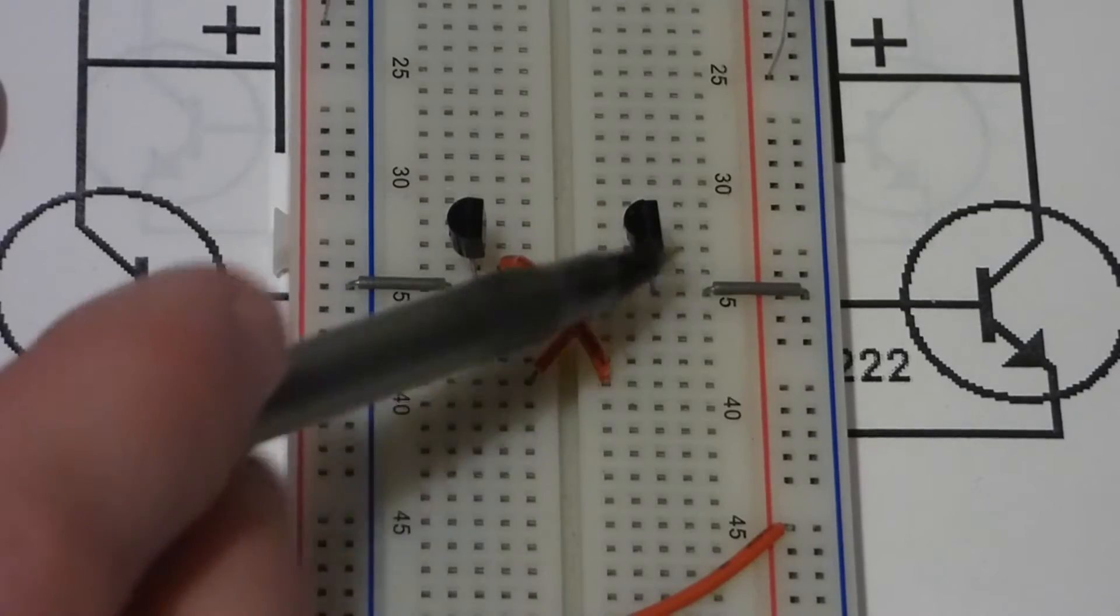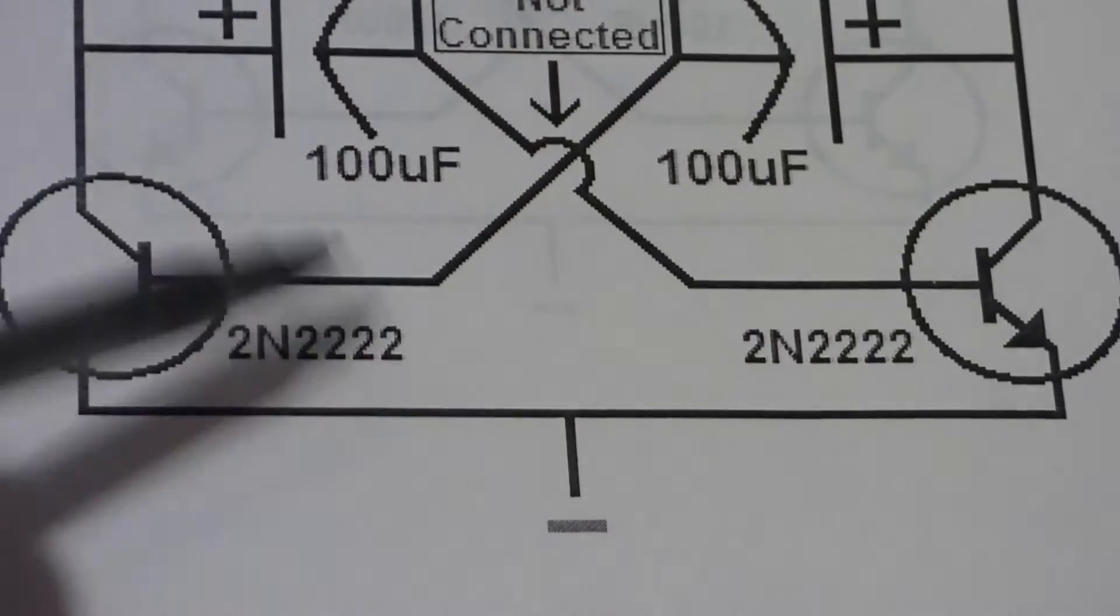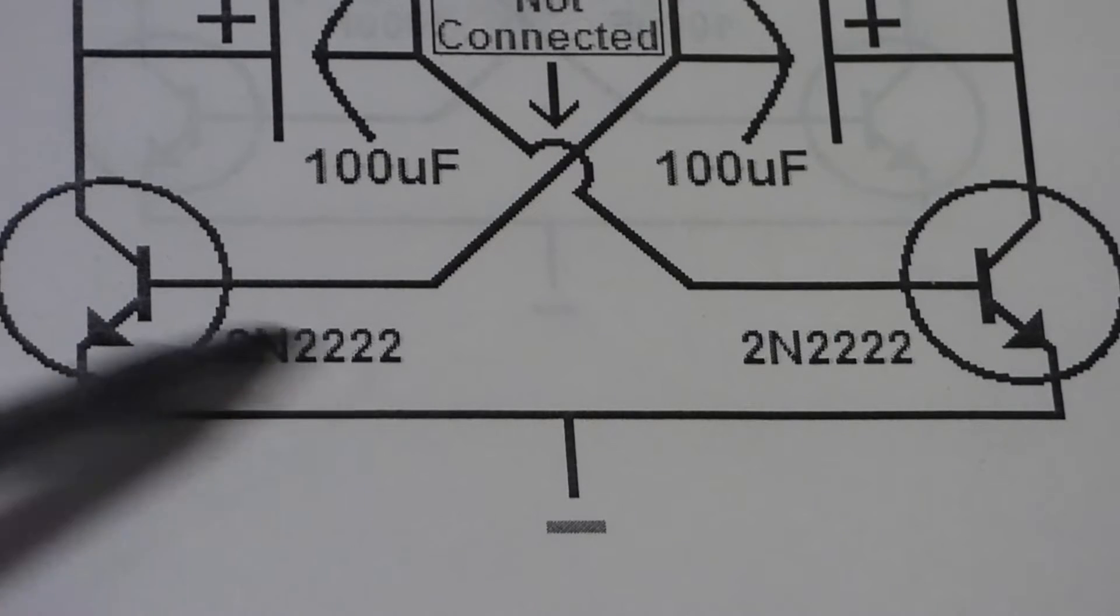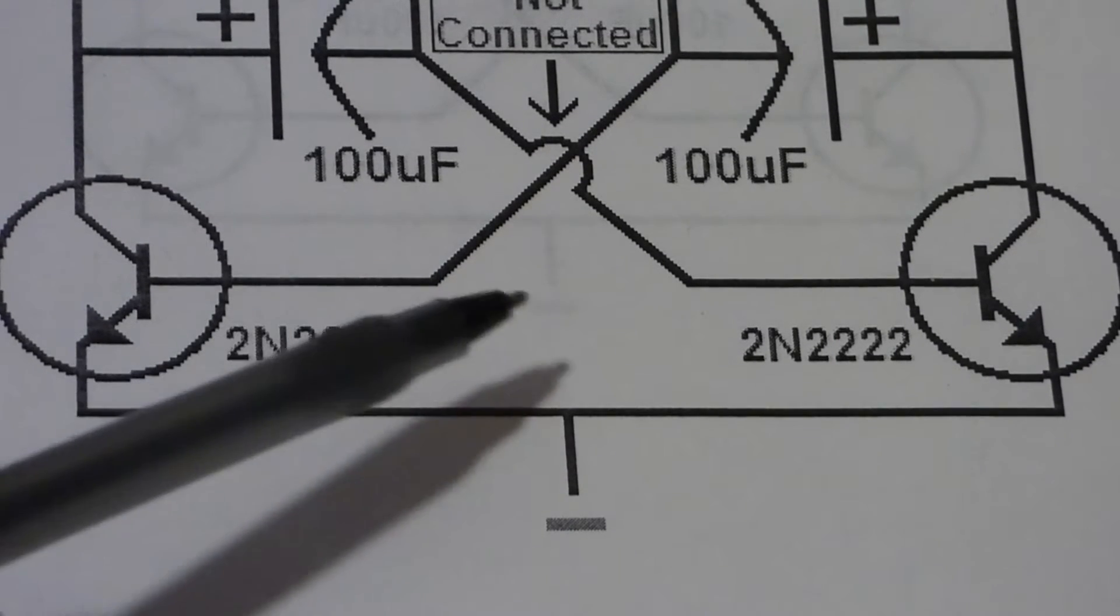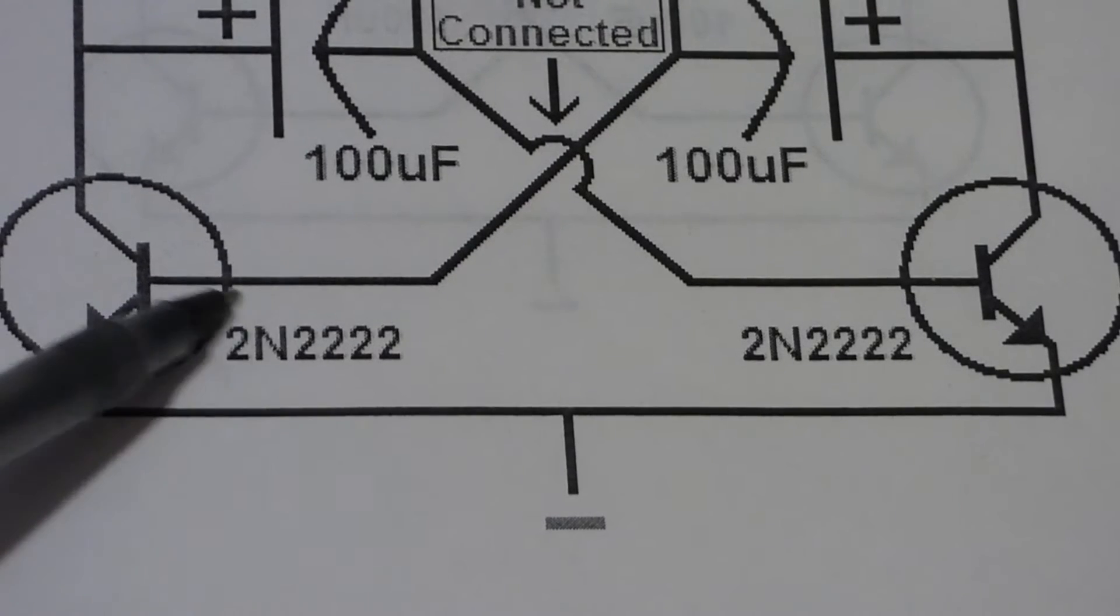So, I can just throw these jumpers right on there. As you see here, the emitter of both transistors goes right to ground. So that's a really easy part of the circuit. It's best to get the easy parts out of the way.